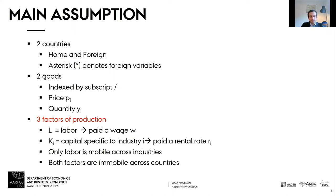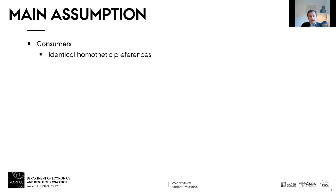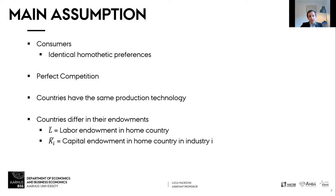Capital, however, is immobile across sectors. There are two types of capital: one specific to industry one and another specific to industry two. The typical example is agriculture and manufacturing — manufacturing uses machines and computers, agriculture uses harvesting machines and tractors. As always, there is no movement of factors across countries, identical consumers across countries, perfect competition, the same production technology across countries, and countries differ only in their endowments — just like in the Heckscher-Ohlin model.